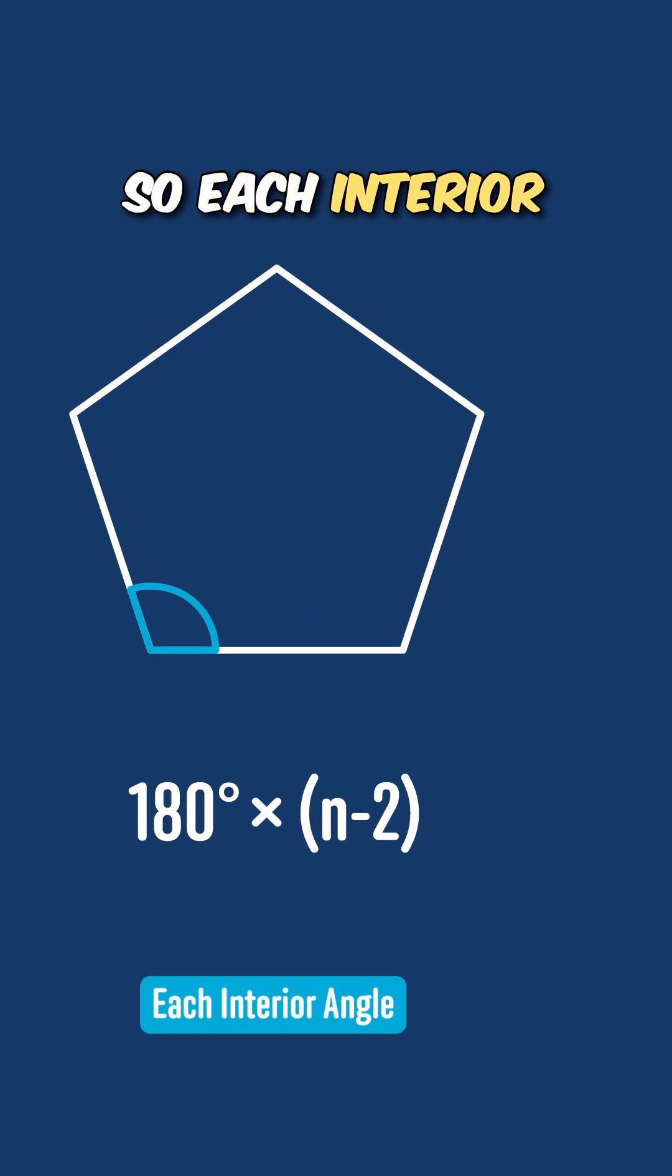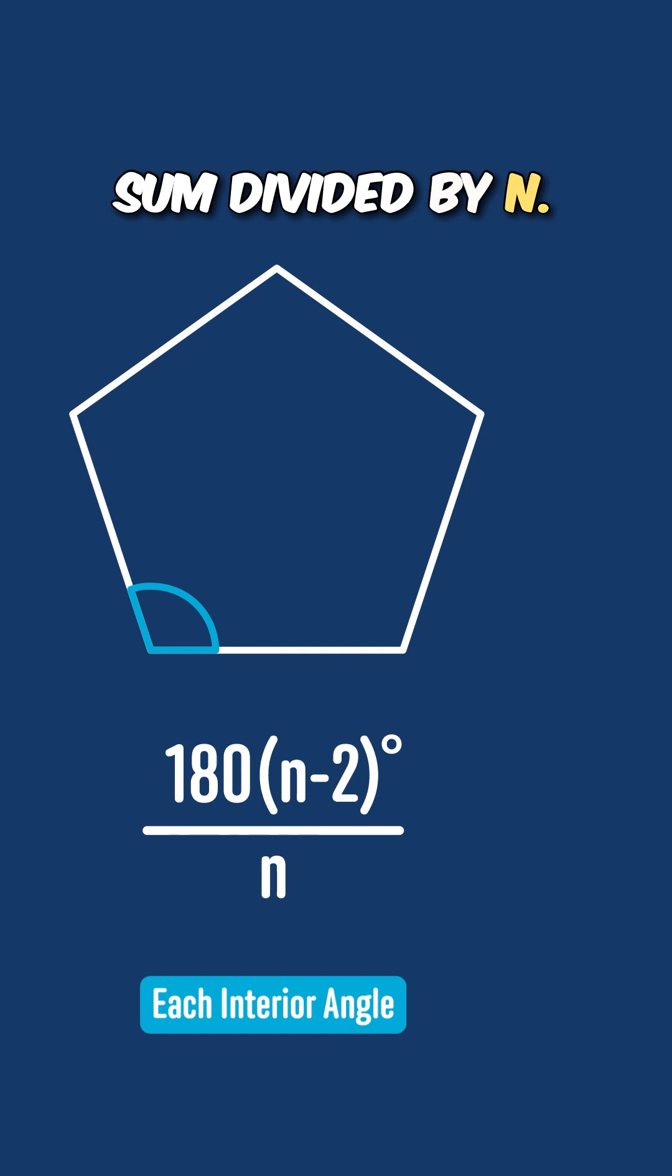So each interior angle equals that sum divided by n, so we can write that as 180(n-2), all divided by n.